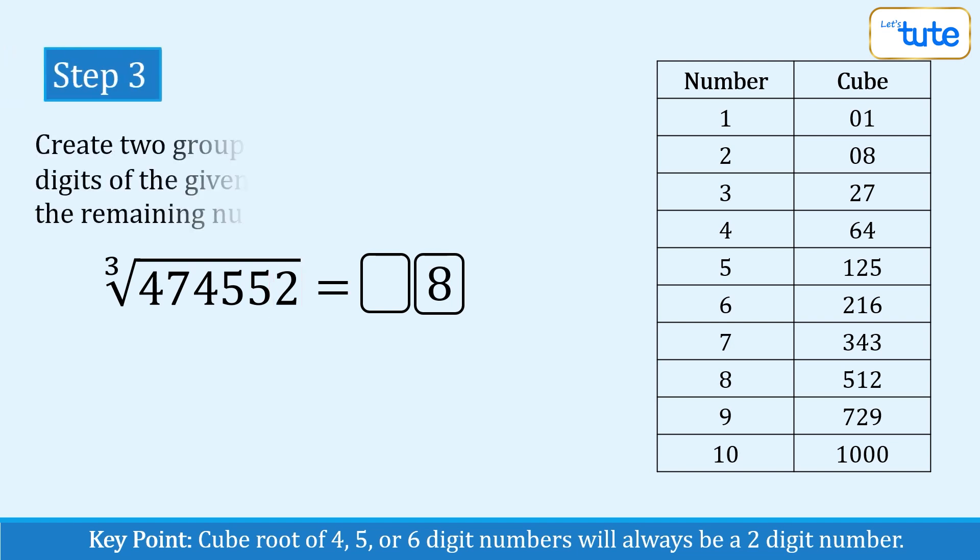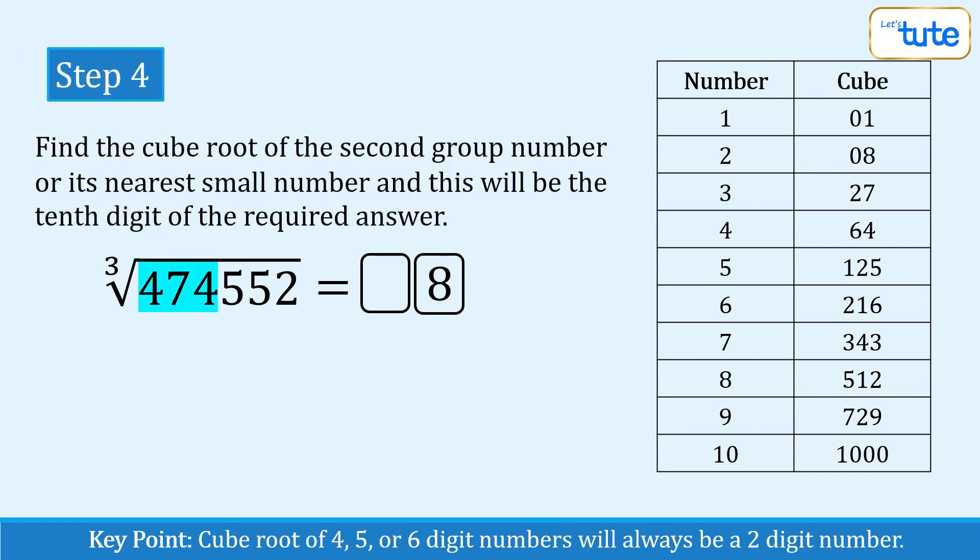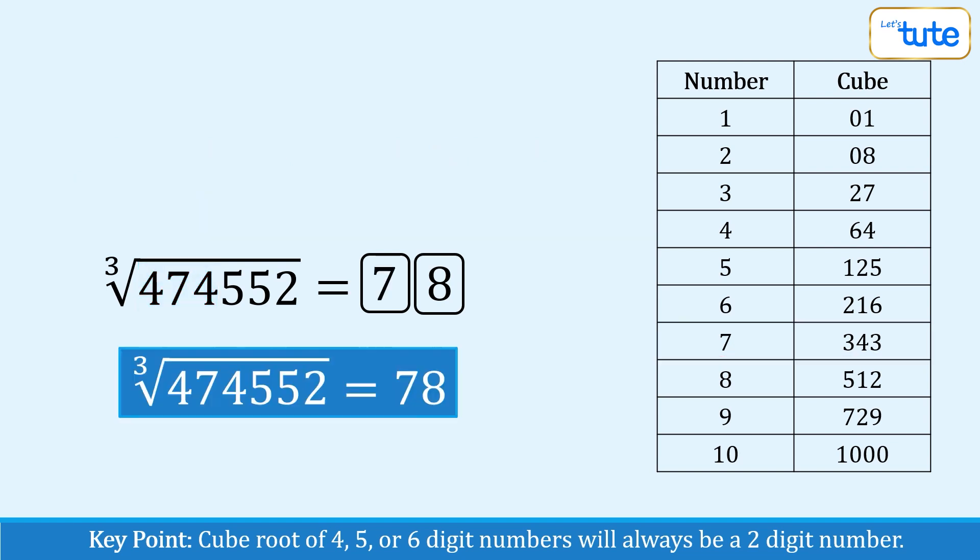Now we have to find the other digit and for that we'll have to group the given number into two groups. Ignore the first group and focus on the second one. The closest small number to 474 in the cube table is 343 and since 7 is the cube root of that number, 78 is the cube root of 474552.